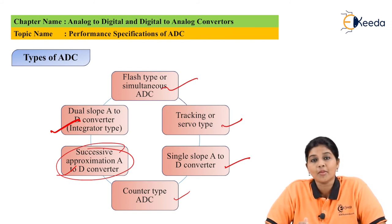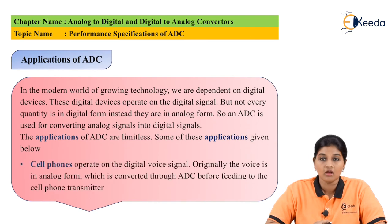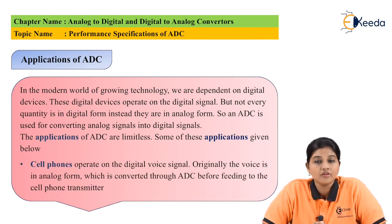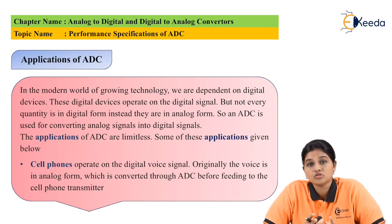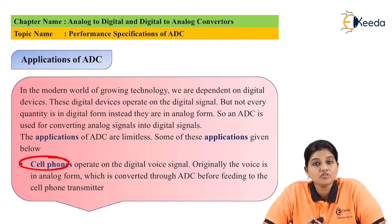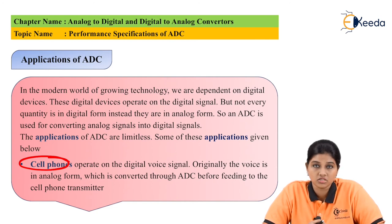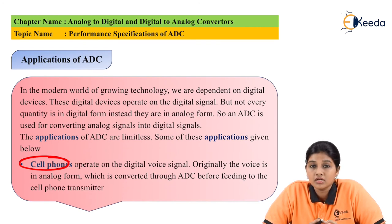Now let's see the different applications of ADC where signal conversion is required. In the modern digital world, everything is digital, but original signals are in analog format. To process, store, or convert signals, we need to convert them into digital form, and that's why ADC comes into picture. The first application is cell phones. Cell phones operate on digital voice, but voice is an analog signal that varies with respect to time. When we use voice through a cell phone, it must be converted into digital format, and in that case ADC is used.